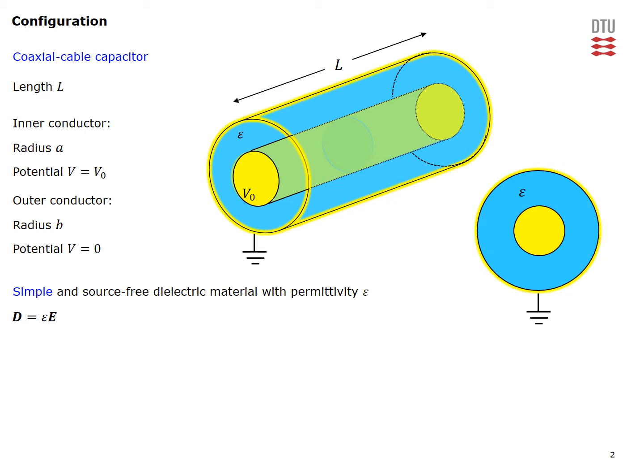Here is the well-known coaxial cable capacitor configuration. We have a coaxial cable which has a length L, an inner conductor with radius A, and an outer conductor with radius B. The inner conductor is kept at a constant potential, while the outer conductor is grounded and thus has a potential equal to zero. The space between the two conductors is composed of simple and source-free dielectric material with permittivity epsilon, giving a simple relationship between the D and E fields. You can see the cross-sectional view of this configuration.